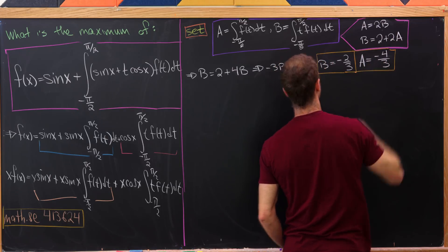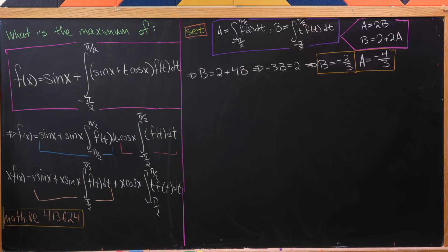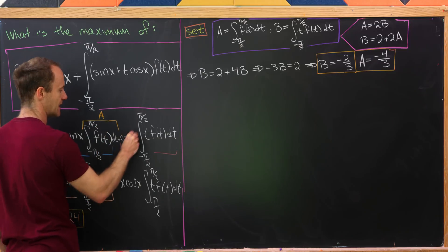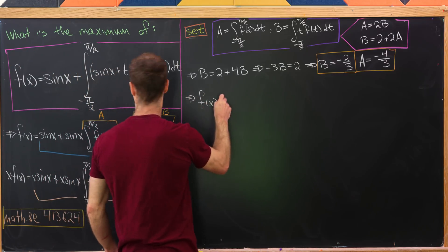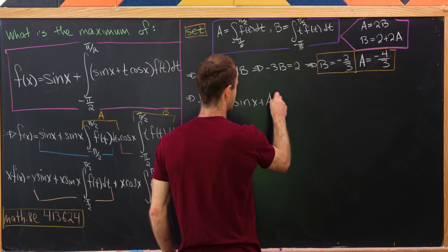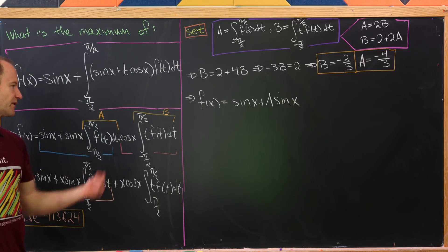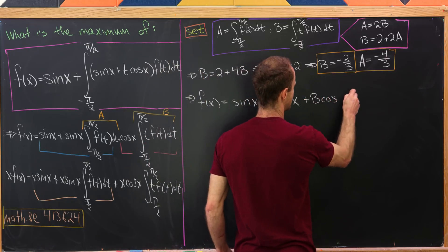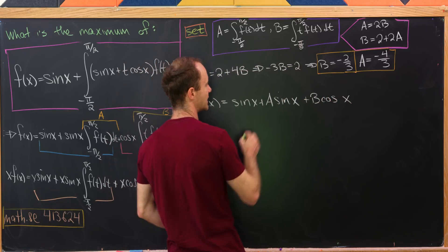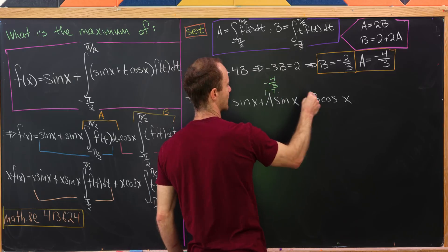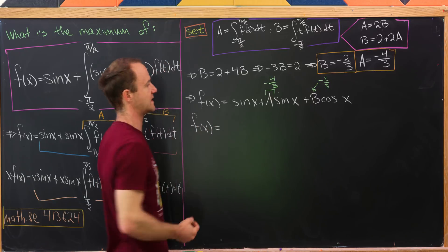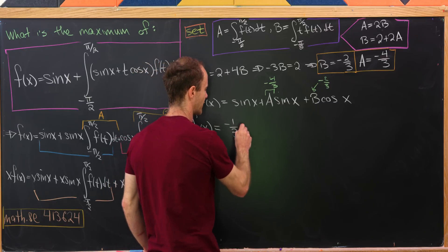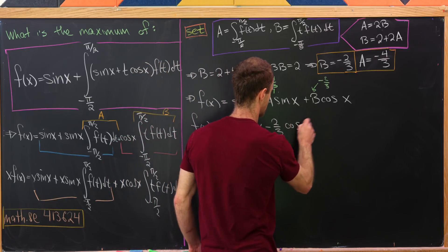Now where do we go from here? Looking at our definition of f(x), we can replace the integral of f(t) dt with a and the integral of t·f(t) dt with b. So f(x) = sin(x) + a·sin(x) + b·cos(x). Substituting a = −4/3 and b = −2/3, we get the quite nice closed form: f(x) = −(1/3)·sin(x) − (2/3)·cos(x).